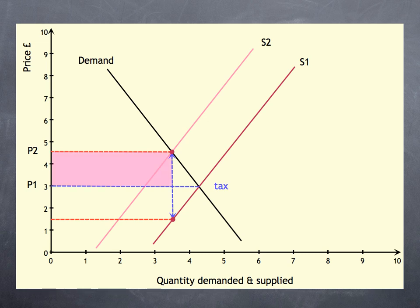The consumers are therefore paying the pink shaded area in tax, whilst the suppliers are paying the green shaded area. Thus, suppliers are absorbing half the tax rise.